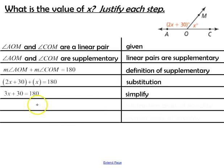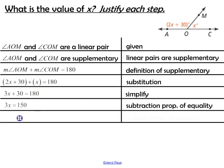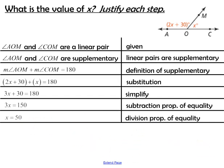To keep solving for x, we subtract 30 from both sides to get 3x equals 150, using the subtraction property of equality. Then we divide both sides by 3 to get x equals 50, using the division property of equality.